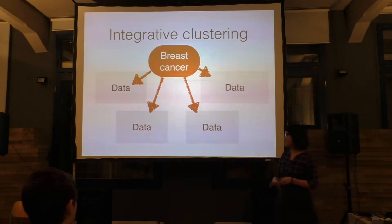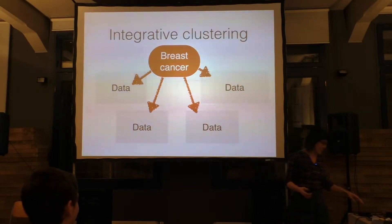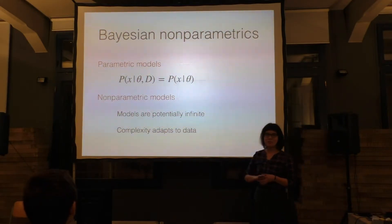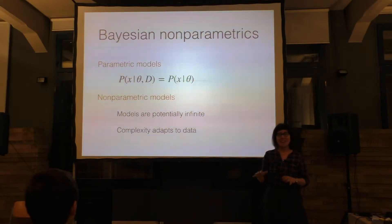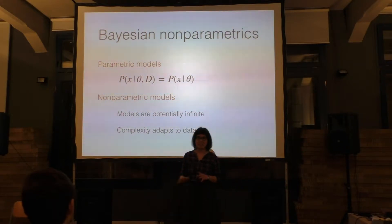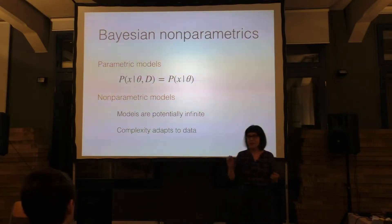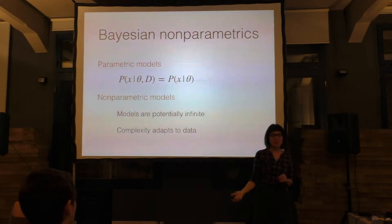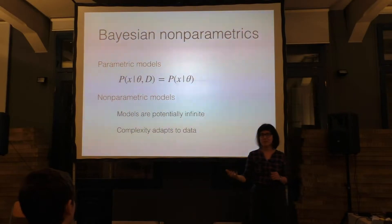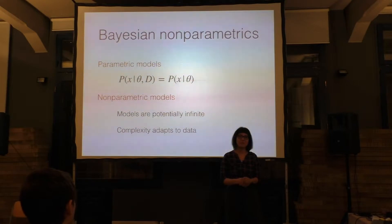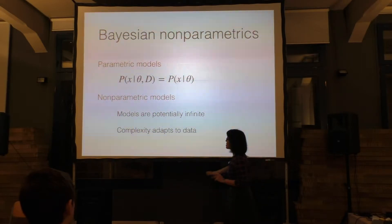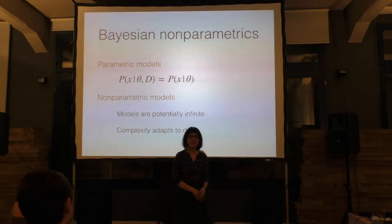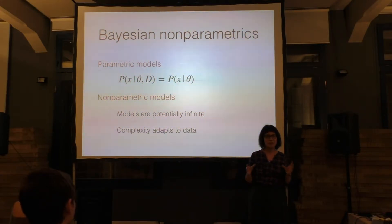So what I'm working on is basically fancy clustering. Standard parametric models — for example clustering with k-means — assume there are k clusters in your data and then separate your data into those k clusters. That's called a parametric model because we assume there is some finite set of parameters that describe your data fully. In a probabilistic model, the probability of x given data and some parameters equals the probability of x given just those parameters, because those parameters describe your data completely.